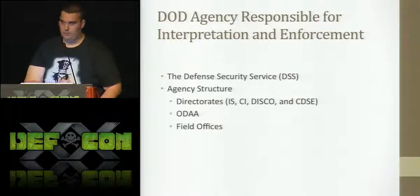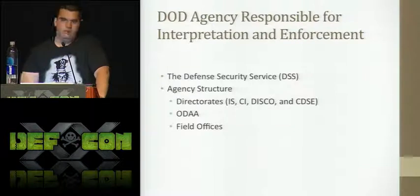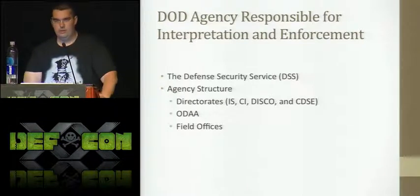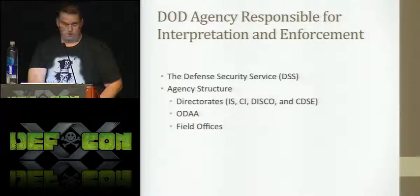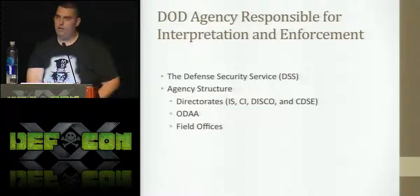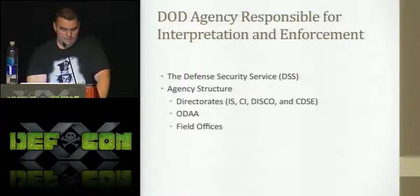CI is just how it sounds — they do counterintelligence. If a defense contractor gets hacked, or if there's a foreign agency trying to target that company, the counterintelligence group will go out there and interview them. Industrial security is the primary portion of the agency — they're the ones that do the inspections of contractors. ODAA is a subgroup of industrial security, called the Office of Designated Approval Authority — these are the guys that handle computer systems that process classified information.